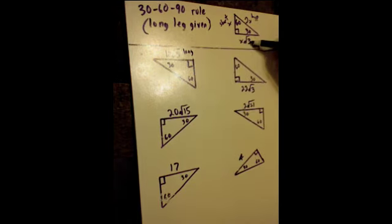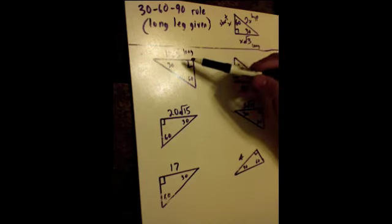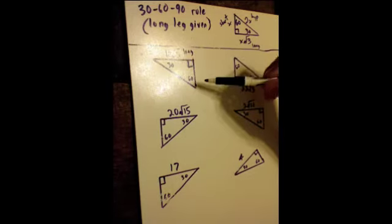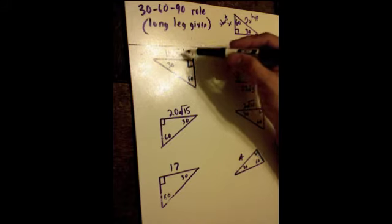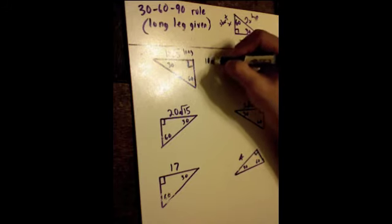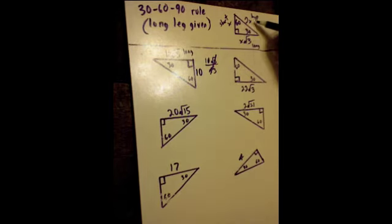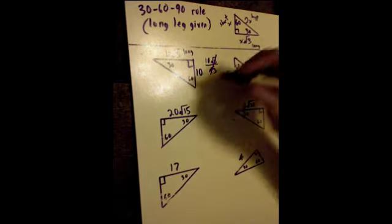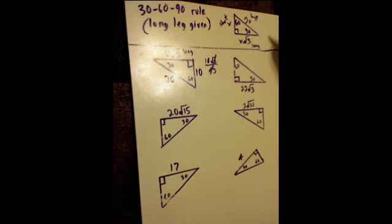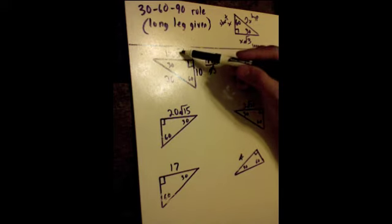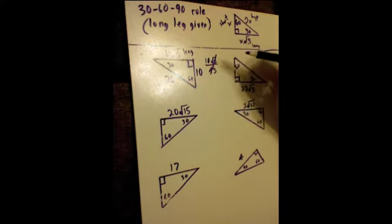When you're given the long side, it's very easy — you can go to the short side. Since you multiply the short side by the square root of 3 to get the long side, going backwards you divide by the square root of 3. So 10√3 divided by √3: these cancel, and the short side is 10. Then to get the hypotenuse, you just double the short side. So the hypotenuse must be 20. Ten times √3 gives the long side; 10 times 2 gives the hypotenuse of 20.